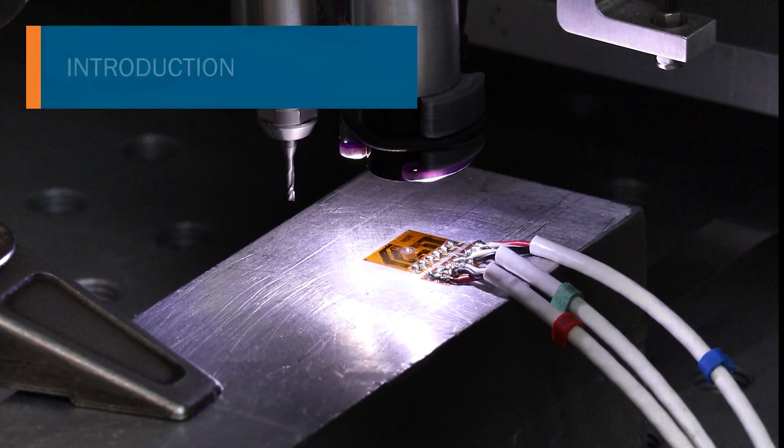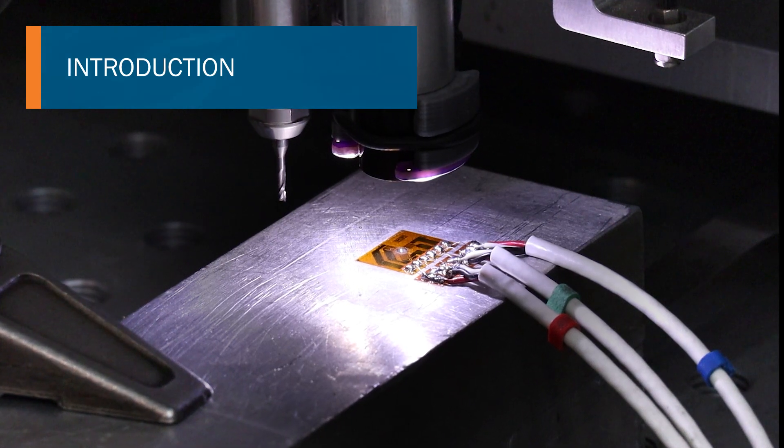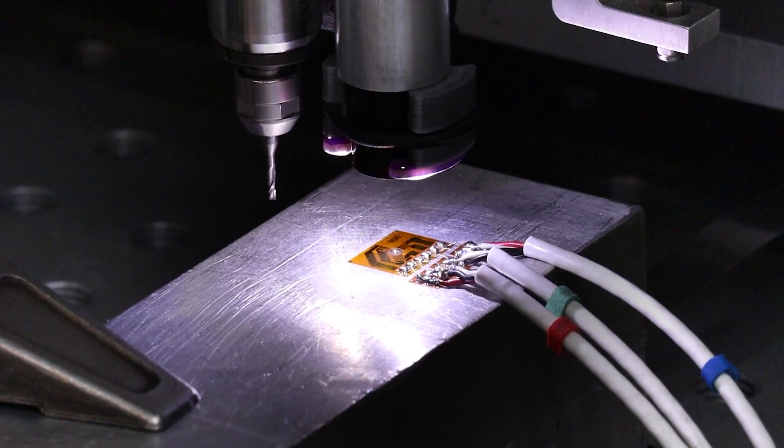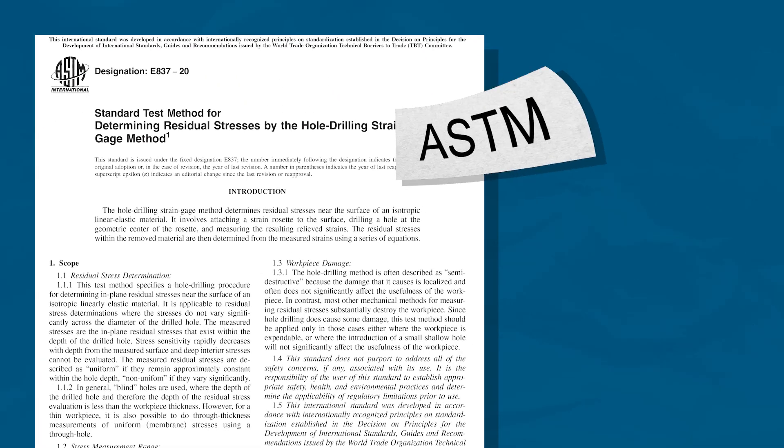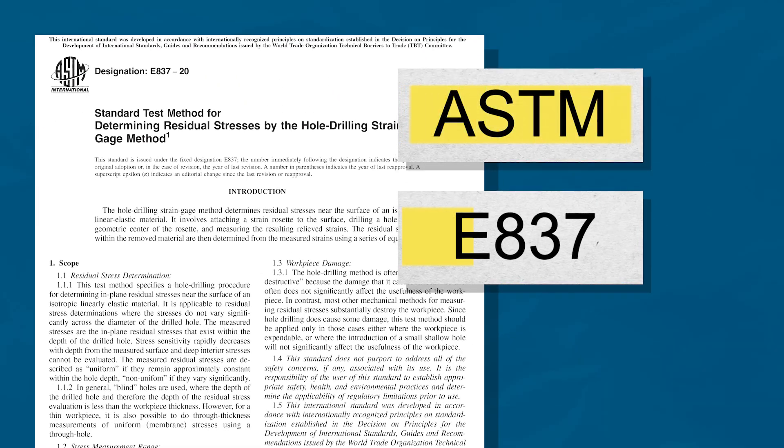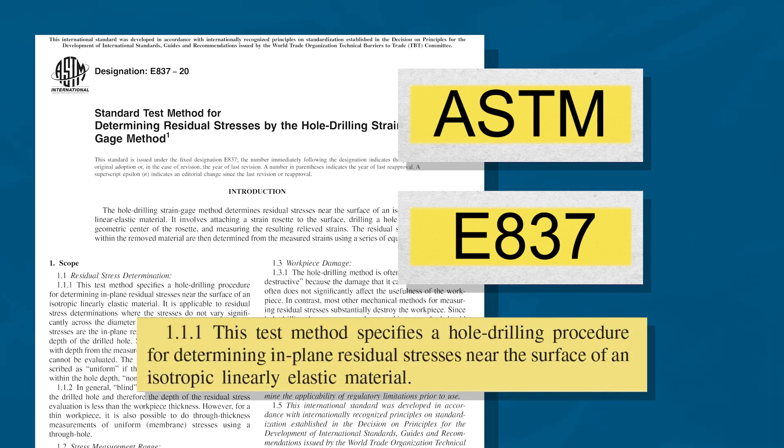Hole drilling is a near-surface residual stress measurement technique in which a small hole is drilled into the surface of a test specimen. Standardized by ASTM as E837, hole drilling is typically performed by drilling small depth increments until a final depth is achieved.